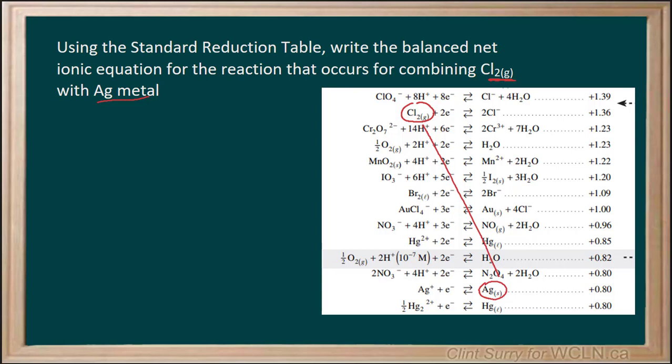Now to write the balanced equation for this, we know that we are going to be working with chlorine, and there are two chloride ions that are made there. And we can see that silver will be oxidizing, so we're going to write it the reverse way. So we start with silver, and we're going to be making silver ion.